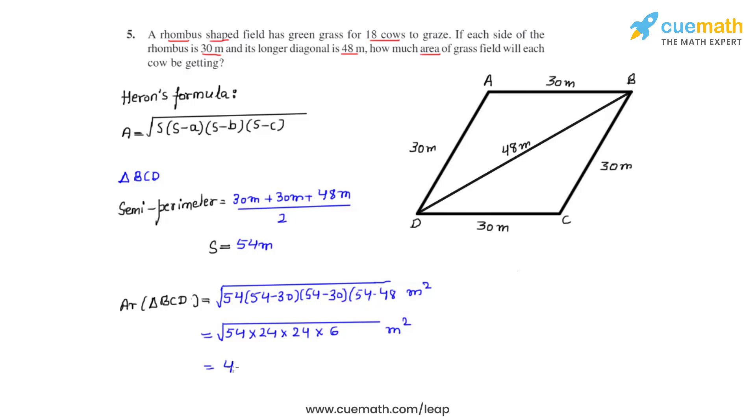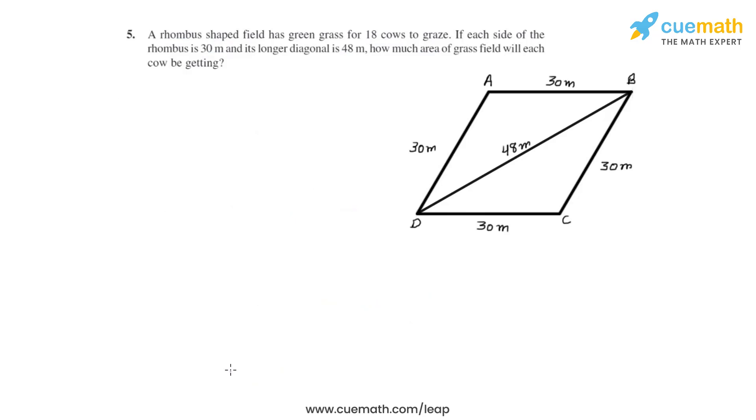That gives us the area of triangle BCD equals 432 meter square. Now that we have found the area of triangle BCD, let's find the area of the rhombus ABCD. We can write area of ABCD, which is the rhombus shaped field, will be equal to two times the area of triangle BCD.